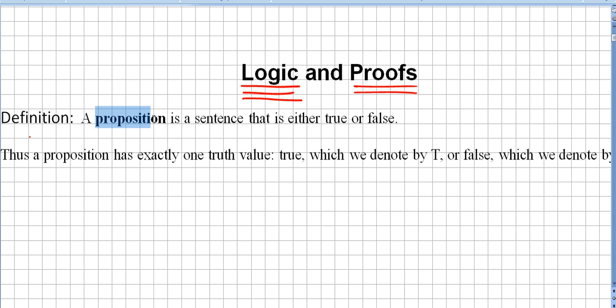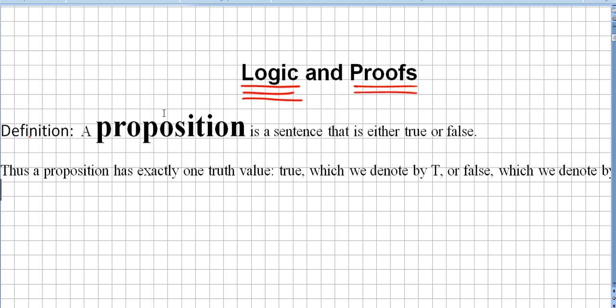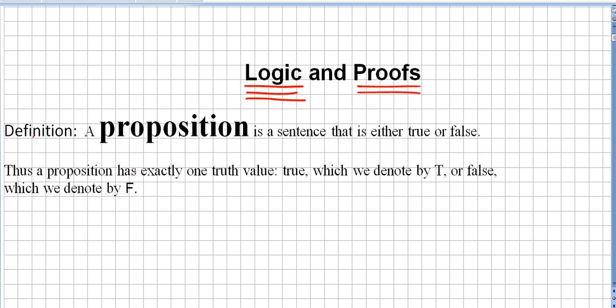We introduce the concept of proposition. What is a proposition? A proposition is a sentence that is either true or false. So the proposition has exactly one truth value. It will be true, which we denote by capital T, or false, which we denote by F. So we have two values for the proposition: true or false.